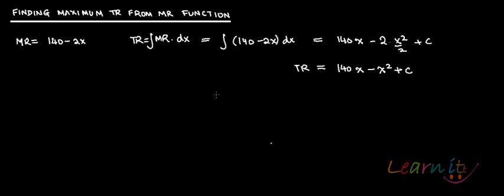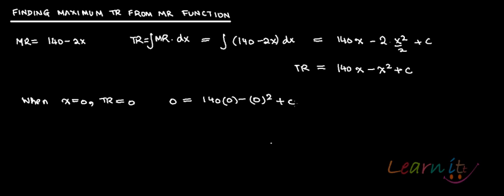To find the constant C, use the condition that when x equals 0, total revenue equals 0. Substituting: 140 times 0 minus 0 squared plus C gives C equals 0. Substituting C equals 0 back, the total revenue function becomes TR = 140x minus x squared.